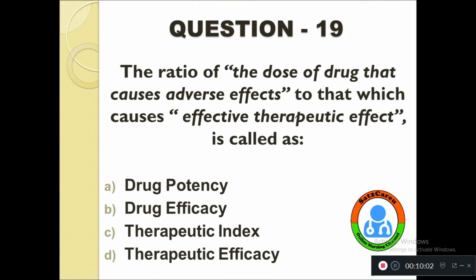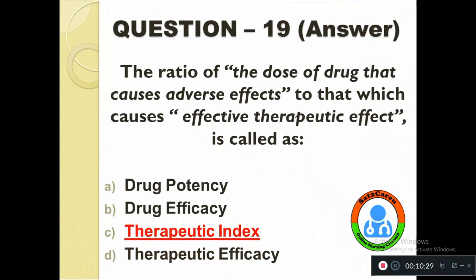Question number nineteen: The ratio of the dose of drug that can cause an adverse effect to that which can cause an effective therapeutic effect is called as — option A: Drug potency, B: Drug efficacy, C: Therapeutic index, D: Therapeutic efficacy. The correct answer is Therapeutic index.